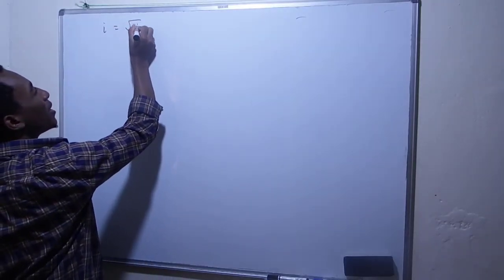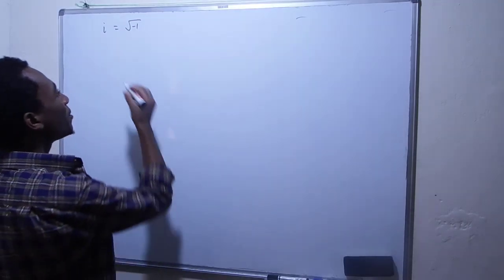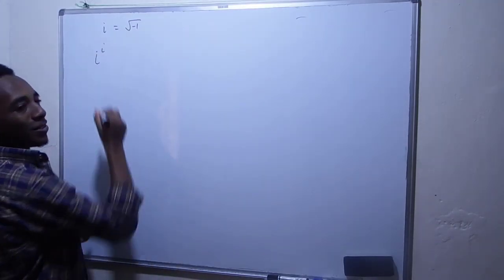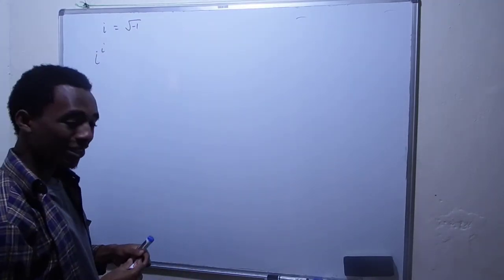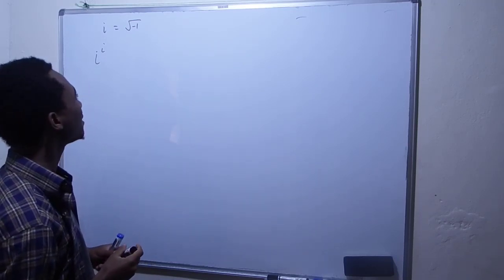Hi, so we know that i is the square root of negative 1. How can we calculate i to the power i? This is an interesting problem and I'm going to solve it in two ways.